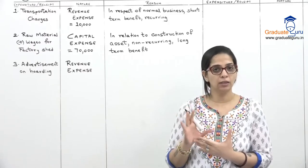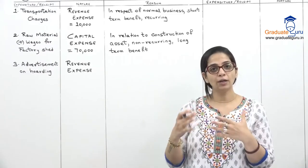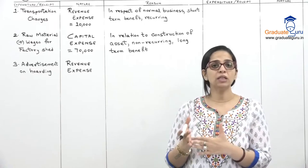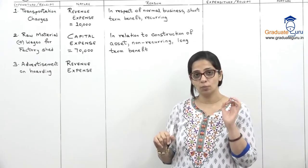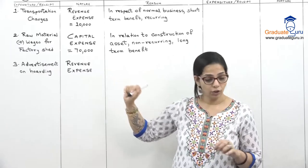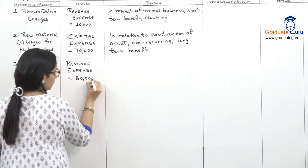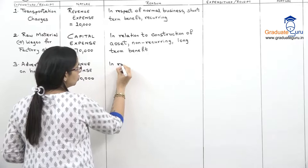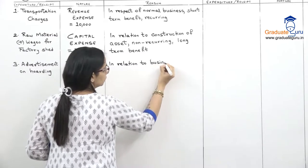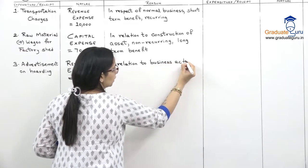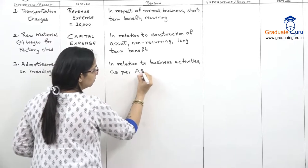Because it covers two years, one year's advertisement will be shown in P&L that year, and the remaining one year will be shown in the balance sheet as prepaid expense — prepaid means we have paid in advance, so it temporarily shows as an asset. For now, because AS 26 says it must be revenue, we treat the full amount of 80,000 as revenue expense in relation to business activities.